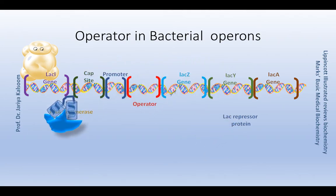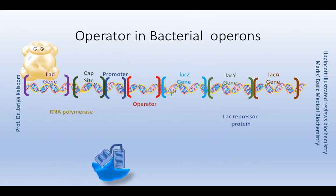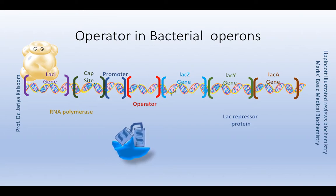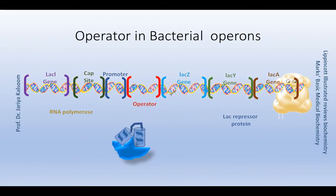So here you can see that the repressor protein fails to bind to the operator, and now the RNA polymerase can transcribe the genes.